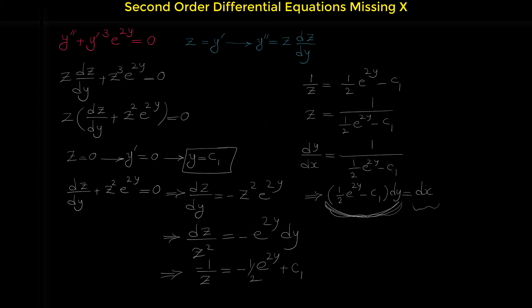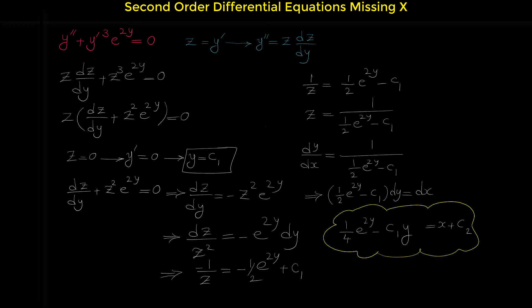The integral of the right side is x plus a constant c₂. The integral of one-half e to the 2y is one-fourth e to the 2y, and the integral of the constant c₁ with respect to y is c₁y. So the final solution is one-fourth e to the 2y minus c₁y equals x plus c₂, and this is another solution for this differential equation.